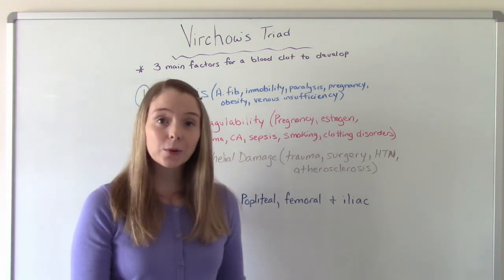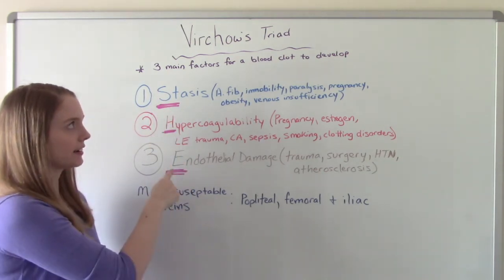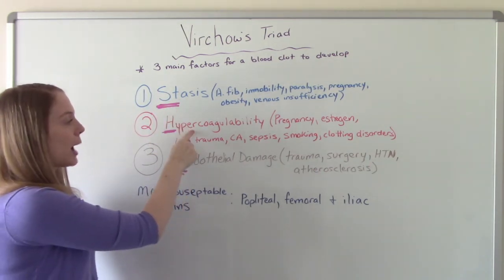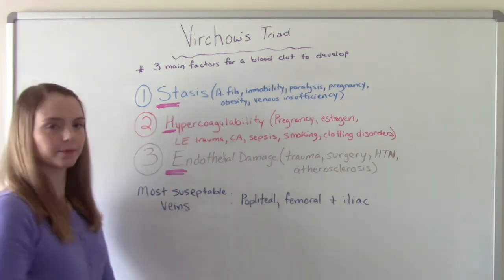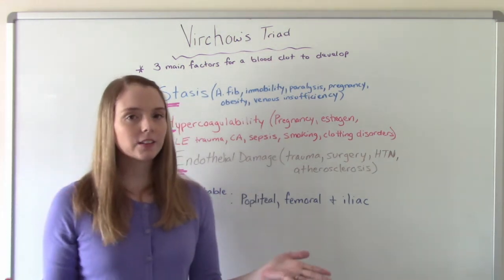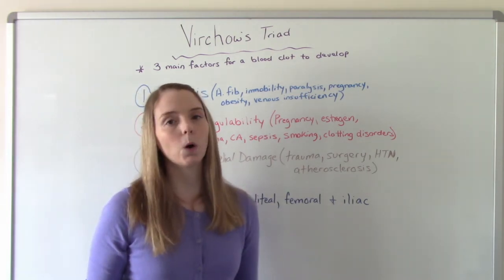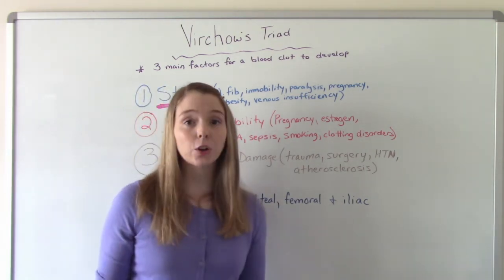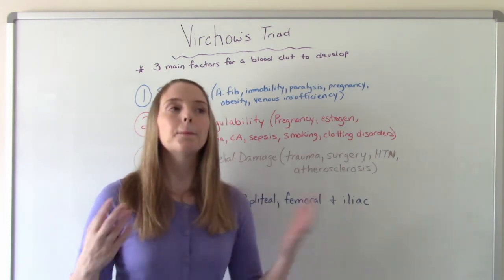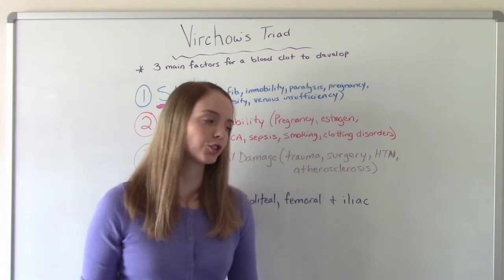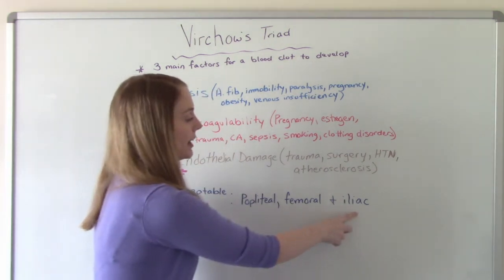The way you can remember these three factors is S-H-E: Stasis, Hypercoagulability, and Endothelial damage. As for which veins are more likely to develop a blood clot — usually the ones in the lower extremity. You can get blood clots in the upper extremities too, but it's more likely in the lower extremities, specifically the popliteal, femoral, and iliac veins.